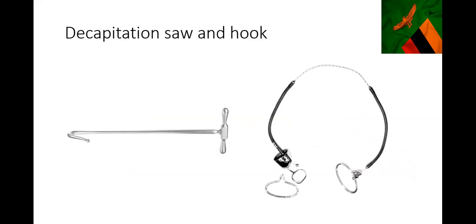These instruments are also used for destructive procedures. There's a decapitation saw on the right side and a decapitation hook on the left. The wire part of the instrument on the right side goes around the neck of the baby, then you pull and the head is removed, allowing you to deliver the woman. The hook also goes around the neck of the baby and is pulled. Once the head is out, it's easier to deliver the baby.